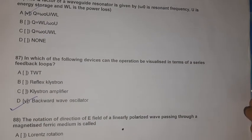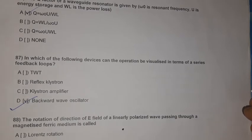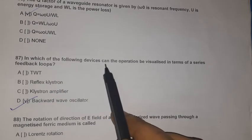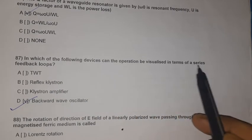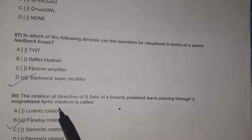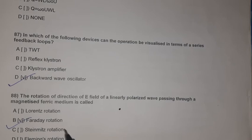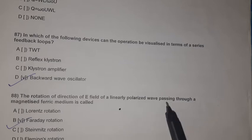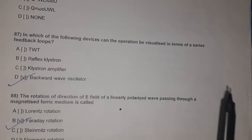Question 85: The device whose operation can be visualized in terms of a series feedback loop is the backward wave oscillator. Question 86: The rotation of the E-field of a linearly polarized wave passing through a magnetized ferrite medium is called Faraday rotation.